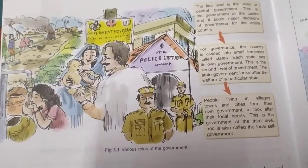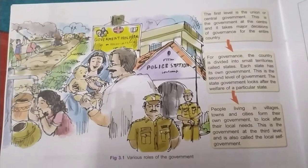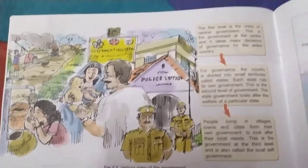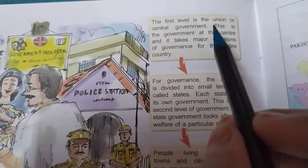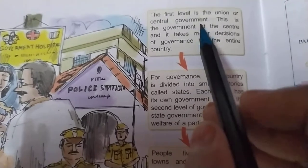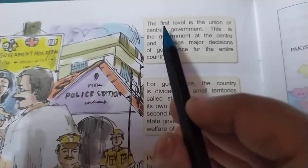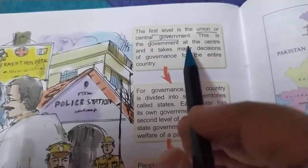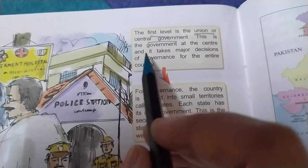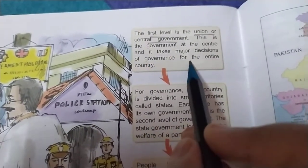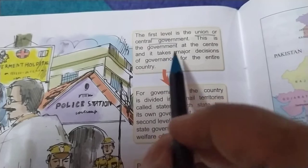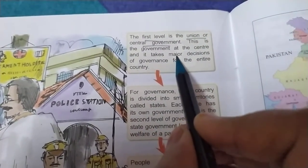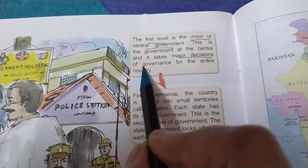This is a picture on page number 232 of your chapter. In this picture, various roles of the government are shown. The first level is the Union or the Central Government, at the higher level. The role of the Central Government is to make major decisions so that they can run the entire country in a better way.